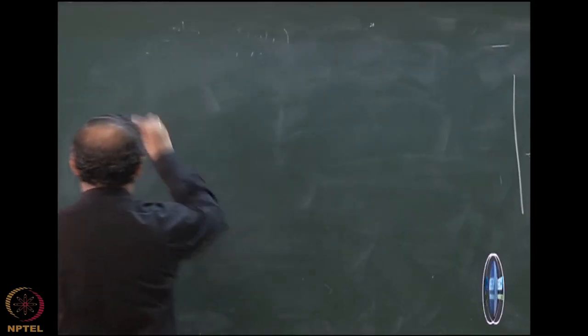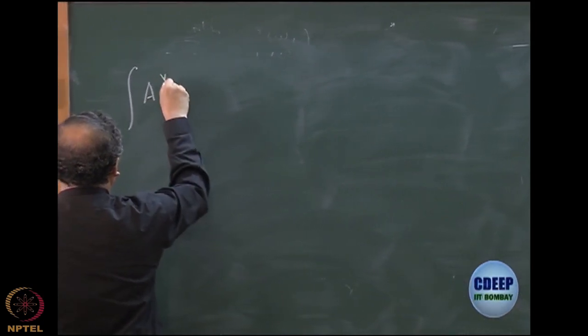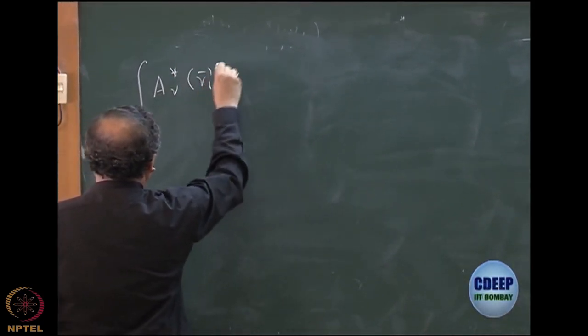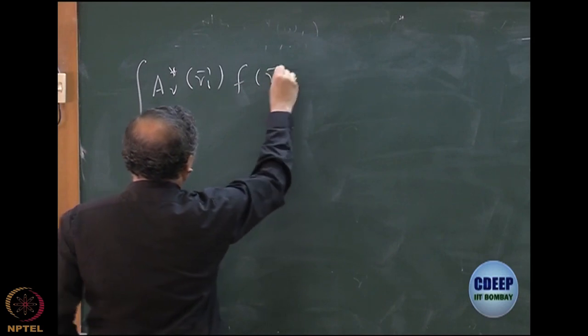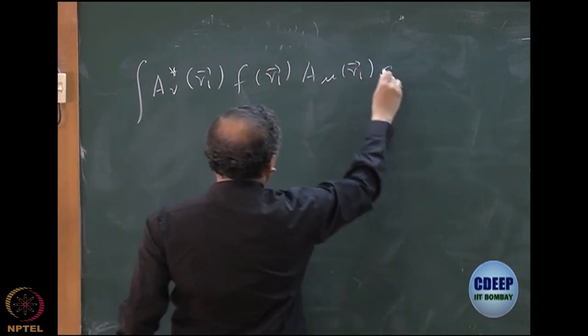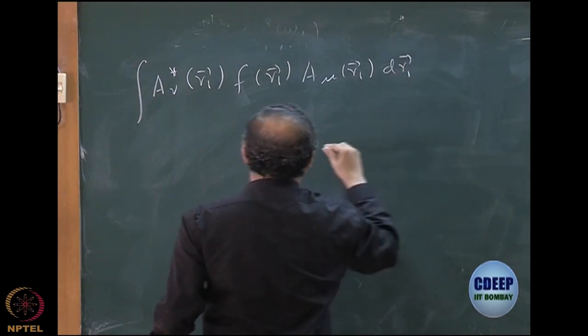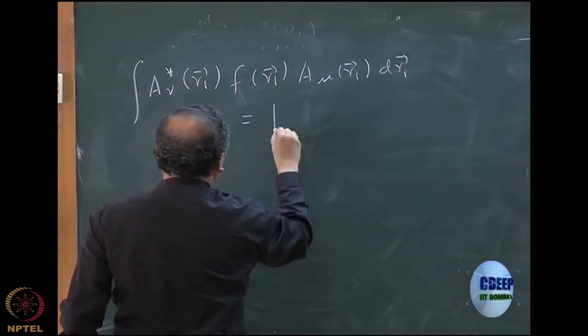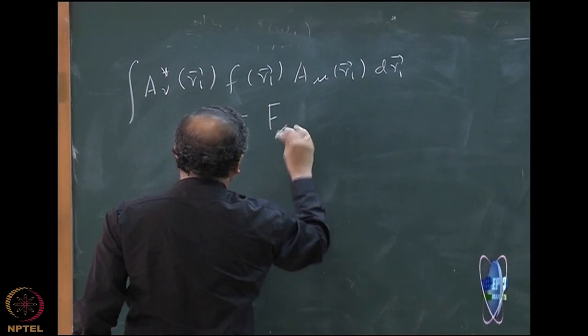Now what Roothaan and Hall proposed was that all we need to know is these numbers and these numbers. Integrals, remember they are definite integrals. So they will become numbers. So let me call this number A nu star R1, F of R1, A mu R1, dR1. Let me call this matrix, matrix of capital F nu mu.